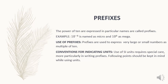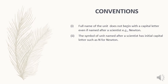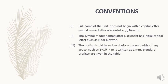Convention for indicating units. Use of SI units requires special care, more particularly in writing prefixes. Following points should be kept in mind while using units. Full name of the unit does not begin with a capital letter even if named after a scientist, for example Newton. The symbol of unit named after a scientist has initial capital letter, such as N for Newton. The prefixes should be written before the unit without any space, such as 1 into 10 raised to the power minus 3 meter is written as 1 millimeter or 1 mm.